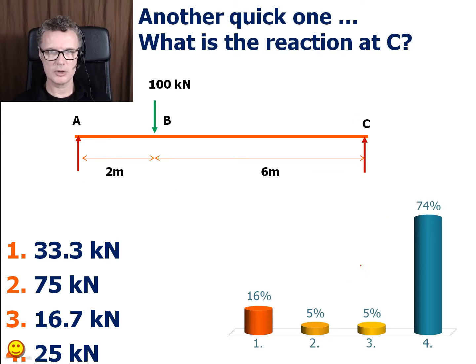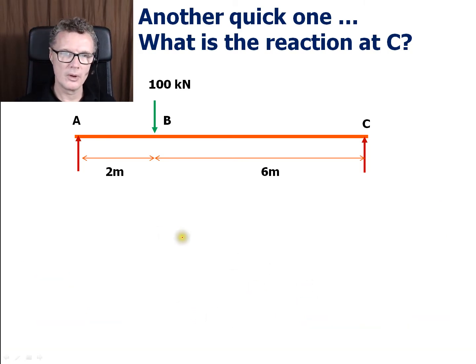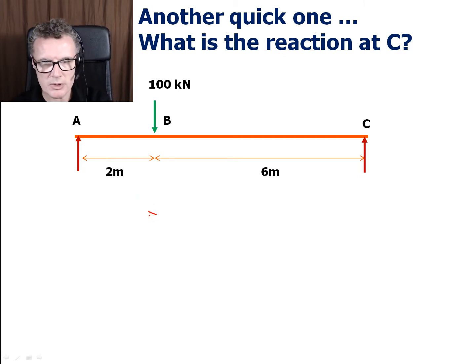Okay, so you should have got 25. How do we get that? We're going to take moments about A.